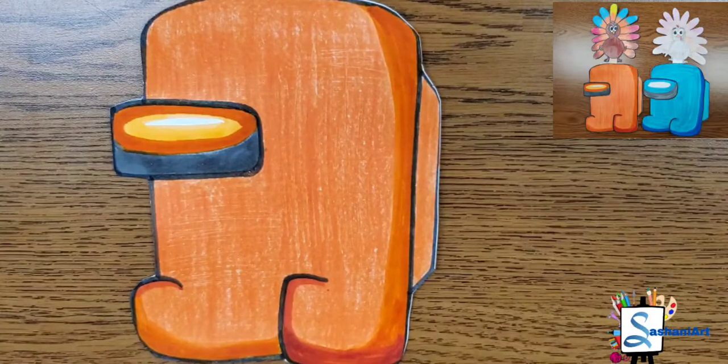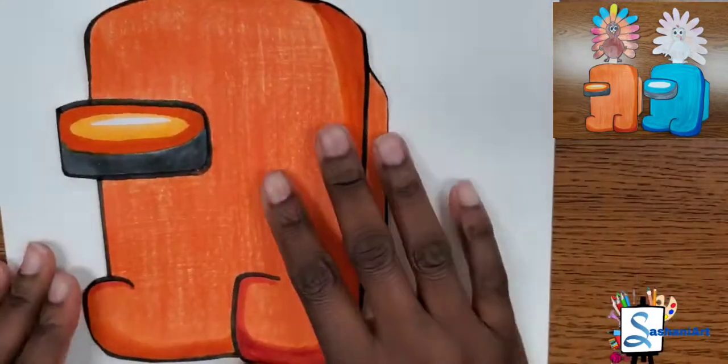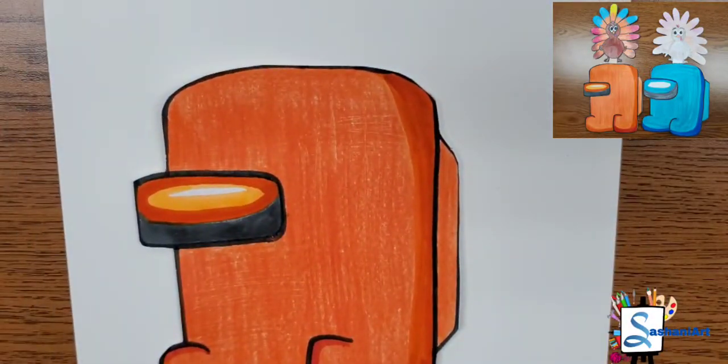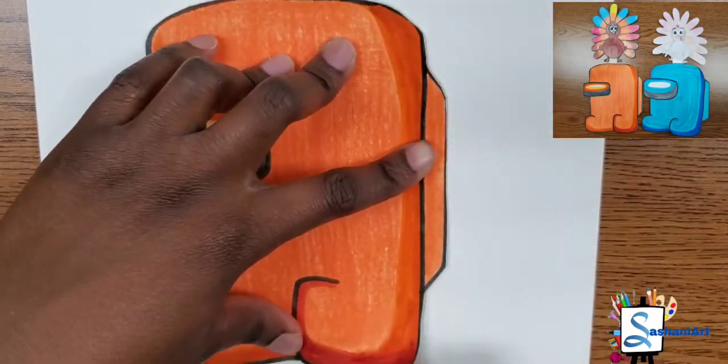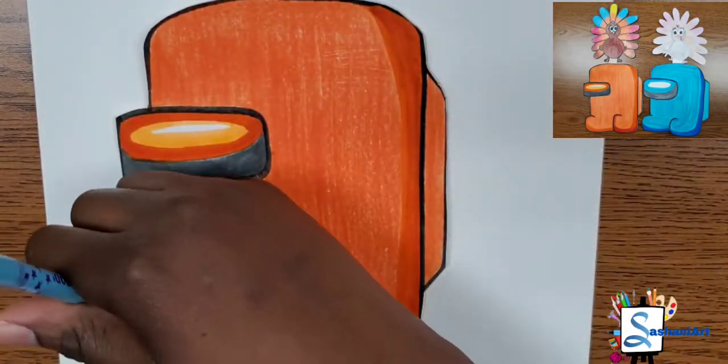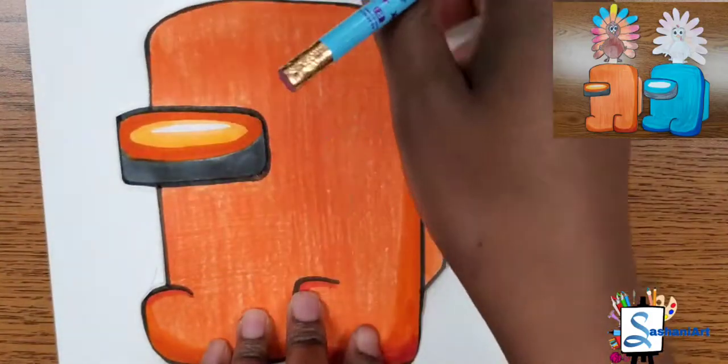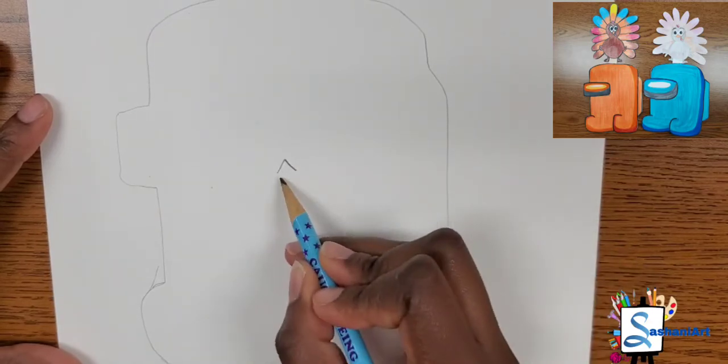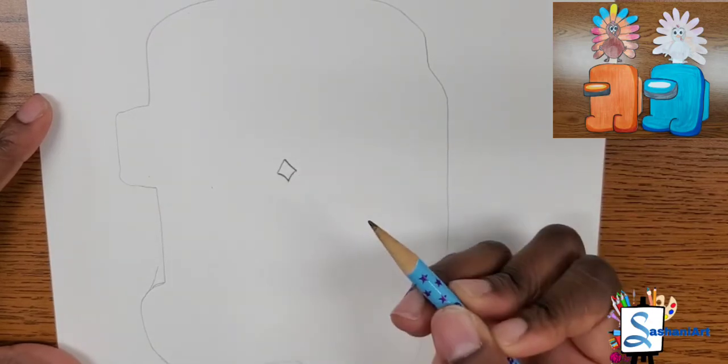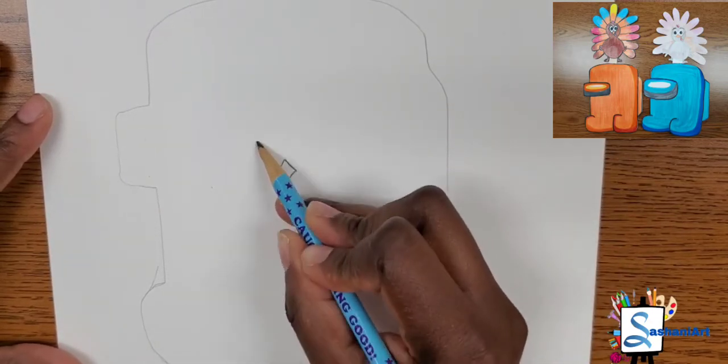Then you're going to grab a white paper. We are going to trace around the edges of our Among Us character. We are doing this so that we can get the exact size of the turkey and get it to fit inside of our Among Us character.